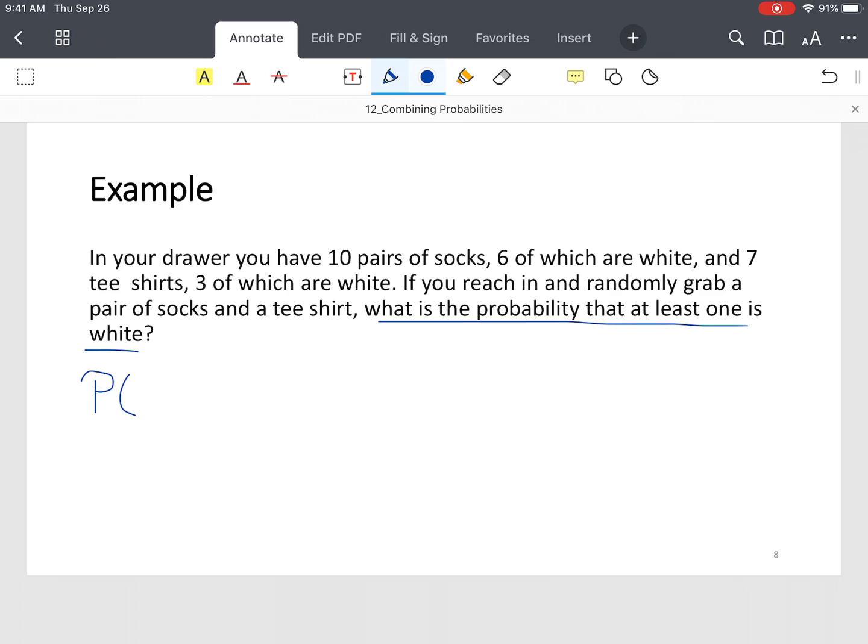So we're going to do probability of a white t-shirt, which we know we have 7 to choose from, 3 of which are white. So the probability of a white pair of socks is 6 out of 10. But we're going to simplify that or reduce it to three-fifths.